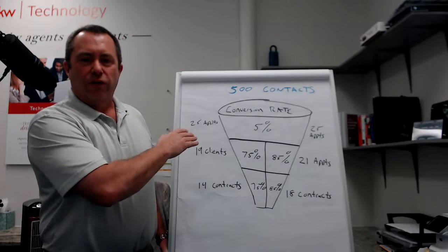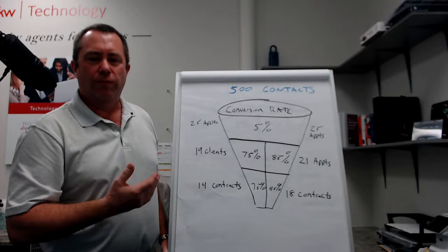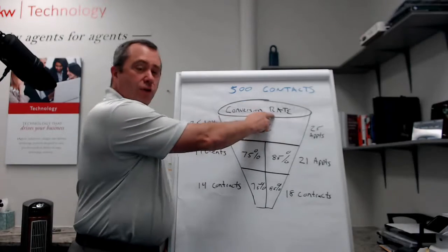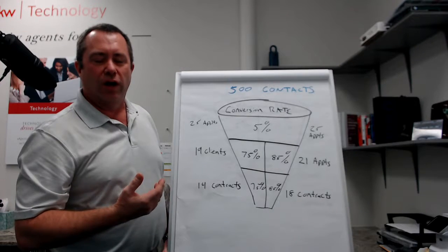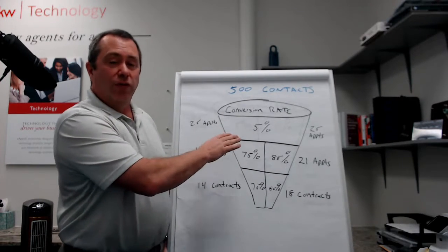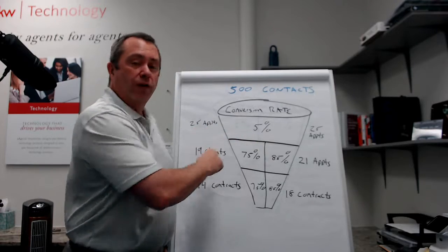Let's assume 500 contacts should be an easy number for people to reach in four to eight weeks. Conversion rates. How often are we going to convert those contacts into an appointment and into a client? Five percent. Pretty stable number. It's going to yield 25 appointments.